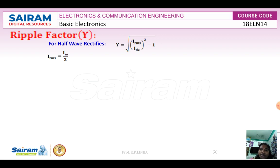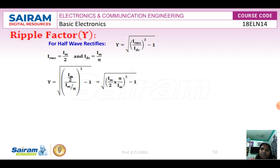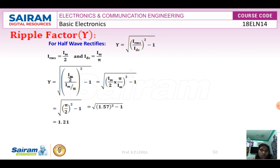For the half wave rectifier, substituting the known values of IRMS and IDC that we already derived, the ripple factor is 1.21. For the full wave rectifier, IRMS equals Im/√2 and IDC equals 2Im/π, so the ripple factor works out to 0.482, meaning 48.2%.